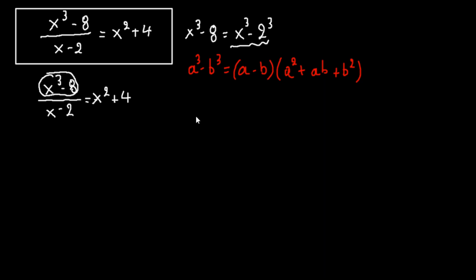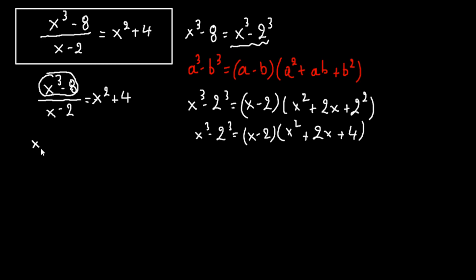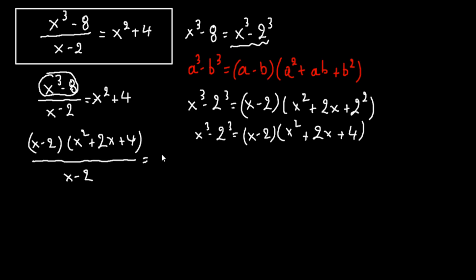So if we substitute here, we have that x to the third minus 2 to the third equals x minus 2, times x squared plus 2x plus 4. So this fraction becomes x minus 2 times x squared plus 2x plus 4, over x minus 2, equals x squared plus 4.